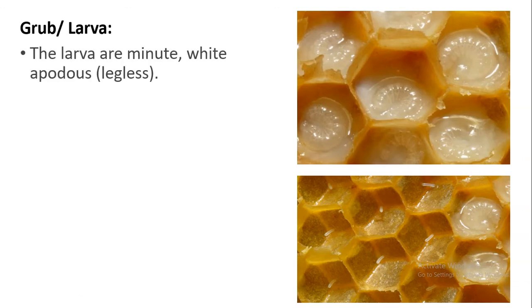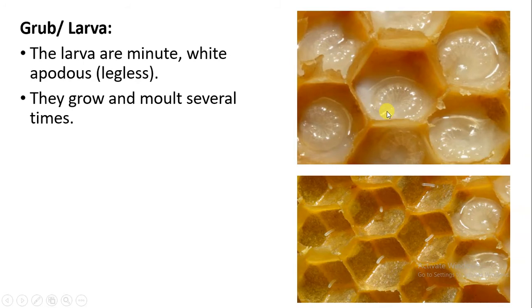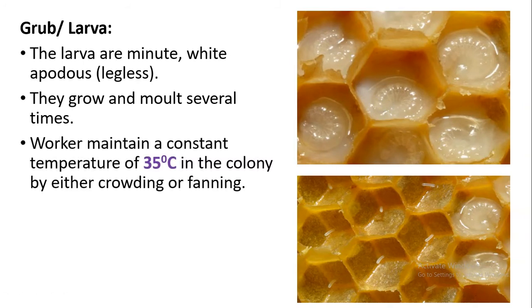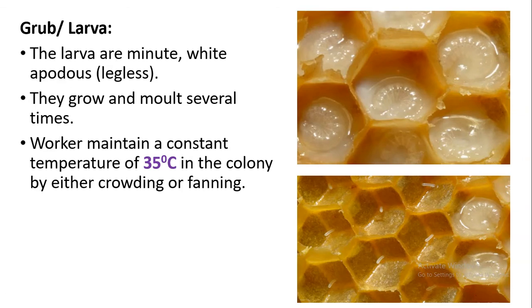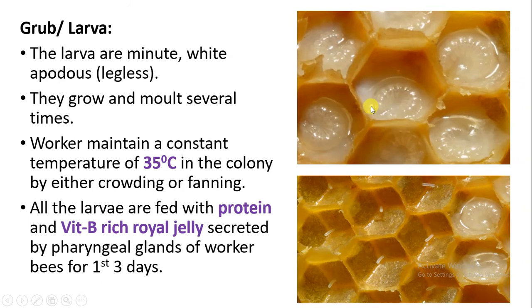The larvae are minute, white, and apodous — they don't have legs. They grow and molt several times during the growth period. Some worker bees help maintain a favorable temperature of 35 degrees Celsius inside the hive. In cold weather they cluster together, and in summer they fan to maintain this temperature. During the larval stage, they are fed well — provided with protein and vitamin B-rich royal jelly.